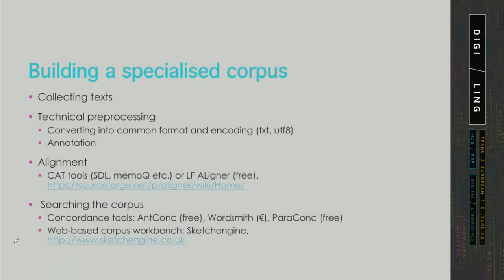When building a specialized corpus, let's look at the tasks. Let's say that you have already collected the texts and now comes some technical preprocessing. You will very likely need to convert those texts into a common format and encoding — usually TXT and UTF-8 encoding — but that depends on the tools you're going to use. Then you will decide on the levels of annotation, again depending on the tools available for the languages in your project.